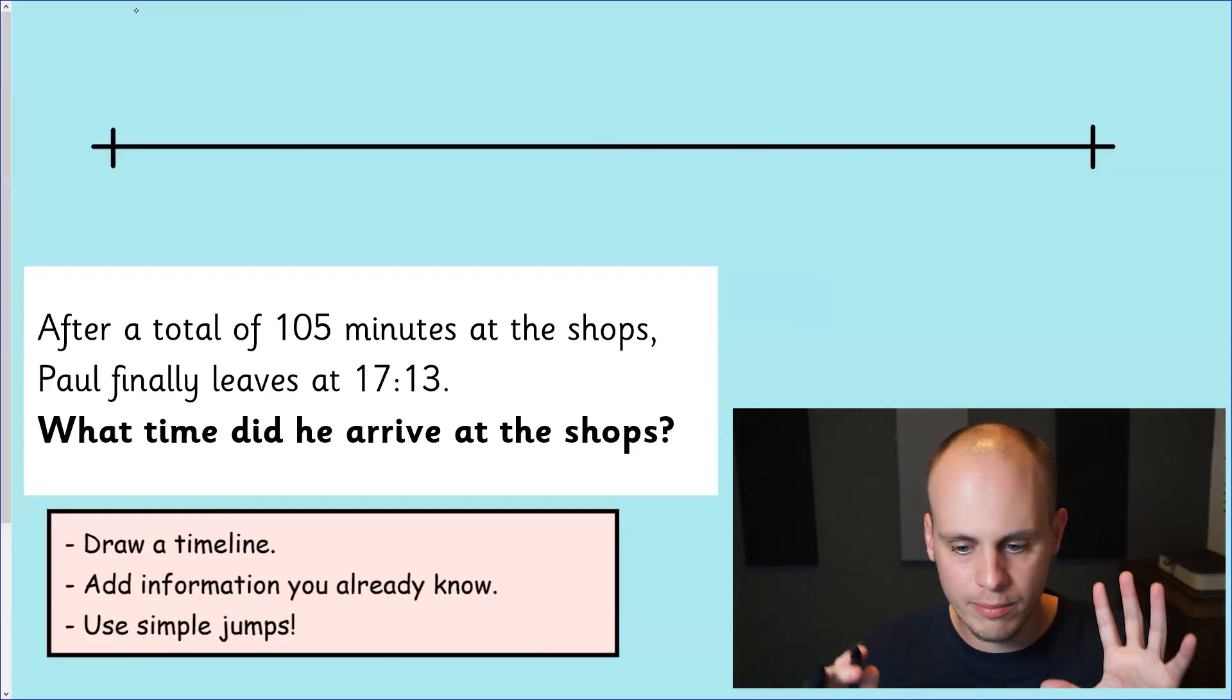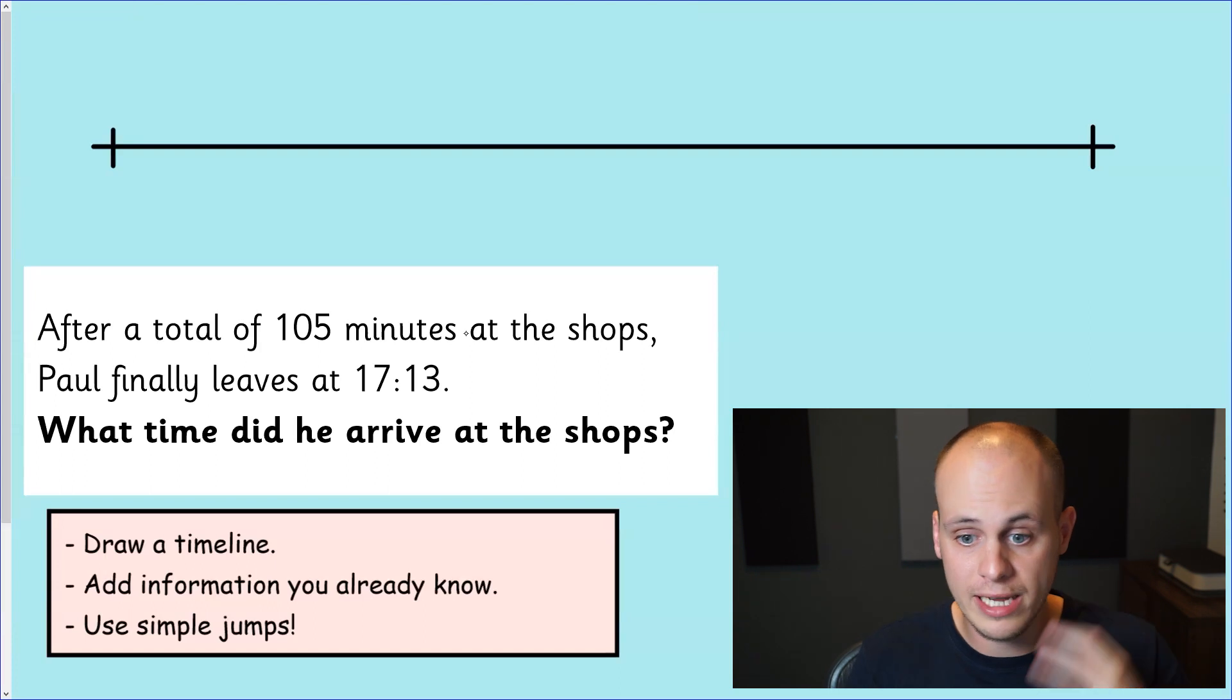We've got the basics now. We're using a number line, we're going to use jumps, simple jumps, add in information we know. So let's get straight into this question. After a total of 105 minutes at the shops, Paul finally leaves at 17:13 or 5:13 p.m. if you know your a.m. and p.m. times. What time did he arrive at the shops?